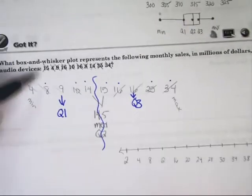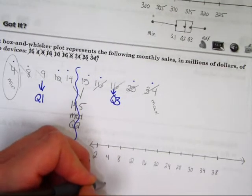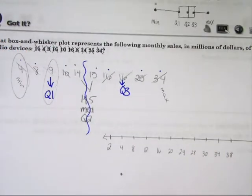So put a dot at, first of all, your minimum, 4. Next, put a dot at quartile number one, 9.